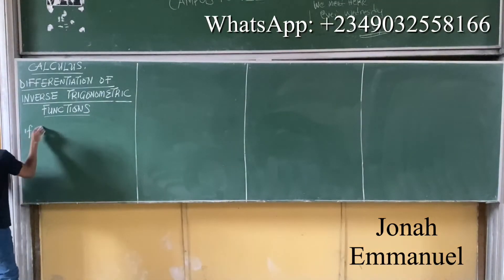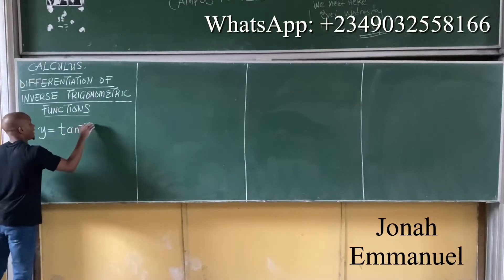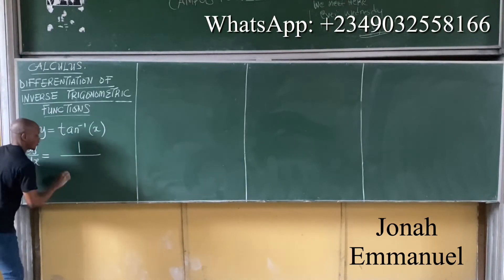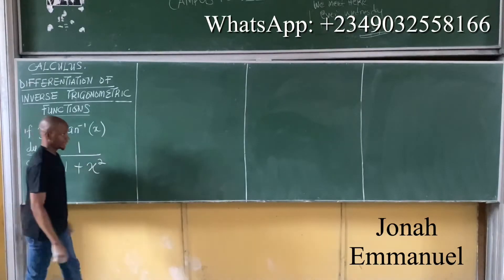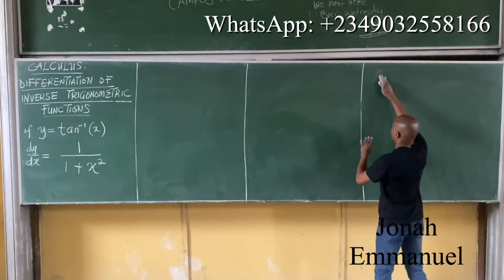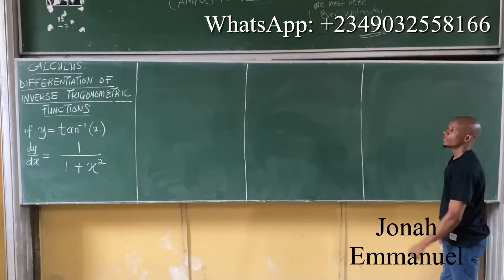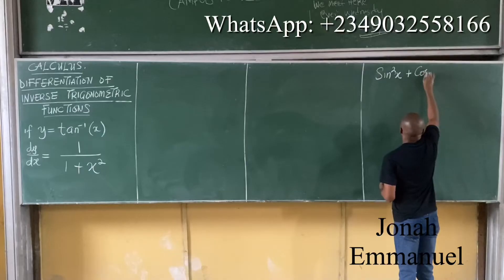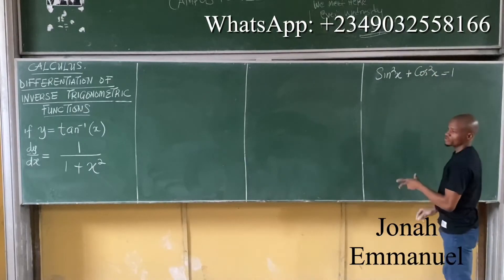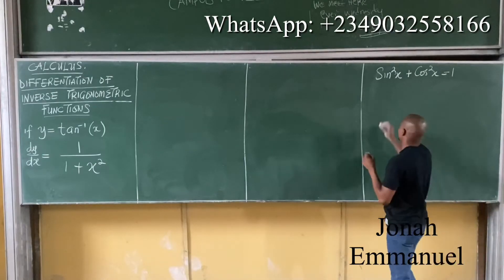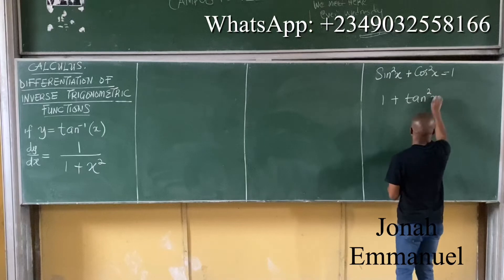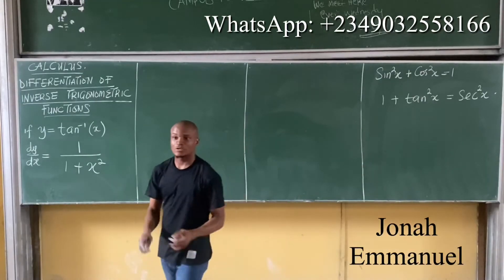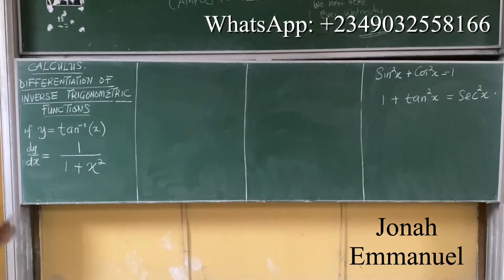Number 3: if y equals tan inverse of x, then dy/dx equals 1 over 1 plus x squared. Before the proof, note that sine squared x plus cos squared x equals 1. When it comes to tan, the relationship is: 1 plus tan squared x equals sec squared x. Please note this.